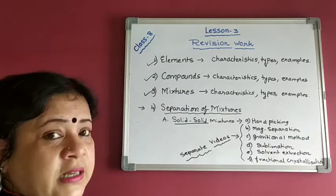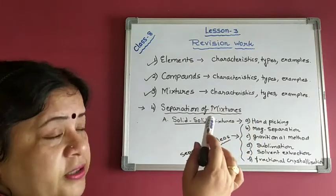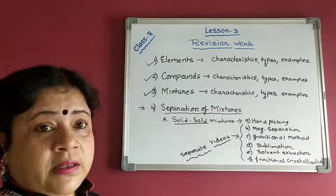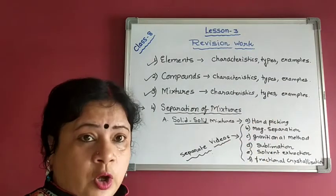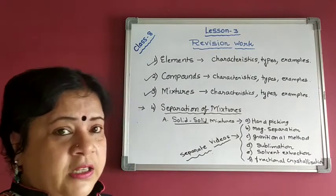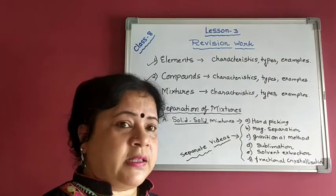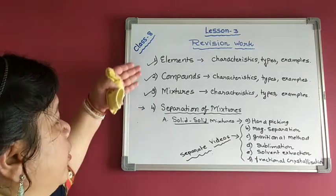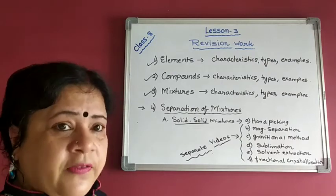Coming to mixtures, we have discussed the characteristics of mixtures, why a mixture is formed, and the differences between mixtures and compounds. We have also covered the types and categories of mixtures — solid-solid, solid-liquid, and liquid-gas — with examples. These are given in table form in your book. Please learn them nicely from there with the examples.